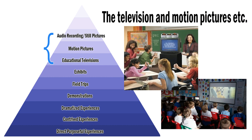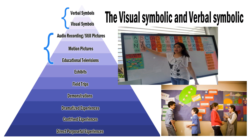The last two levels are the visual symbolic and verbal symbolic. These two levels are the most complex and abstract among all the components of the cone of experience. In the visual symbolic level, charts, maps, graphs, and diagrams are used for abstract representations. On the other hand, the verbal symbolic level does not involve visual representation or clues to meaning. Mostly, the things involved in this level are words, ideas, principles, formulas, and the like.